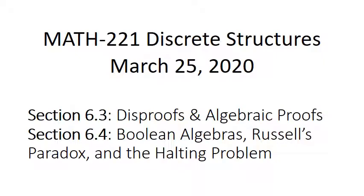Hello everybody! Welcome to another episode of Math 221 Discrete Structures. Today we're going to cover section 6.4 and section 6.3. Section 6.3 is disproofs and algebraic proofs, and section 6.4 is Boolean Algebras, Russell's Paradox, and the Halting Problem. In the textbook the author called section 6.3 disproofs, algebraic proofs, and Boolean Algebras, but I believe that was actually a typo, so I've changed that.